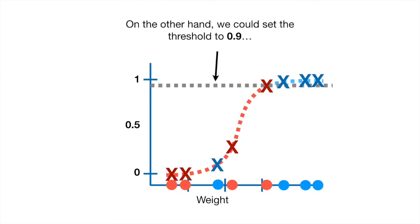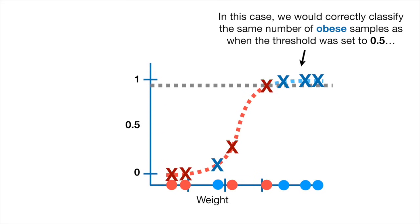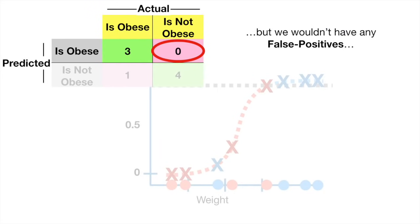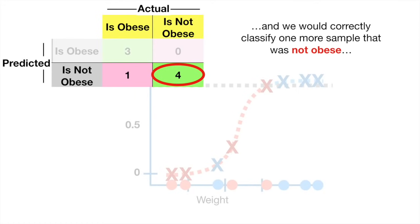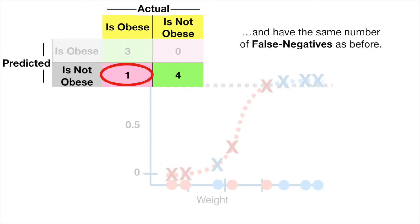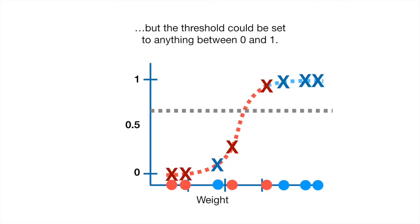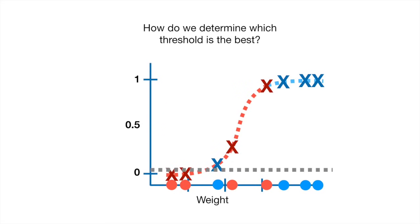On the other hand, we could set the threshold to 0.9. In this case, we would correctly classify the same number of obese samples as when the threshold was 0.5, but we wouldn't have any false positives. We would correctly classify one more not-obese sample, and have the same number of false negatives. With this data, the higher threshold does a better job classifying samples. But the threshold could be set to anything between 0 and 1 — how do we determine which threshold is best?